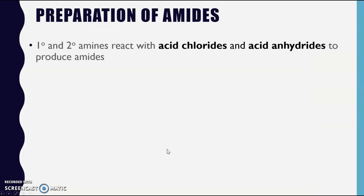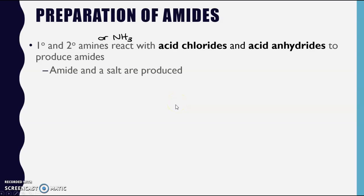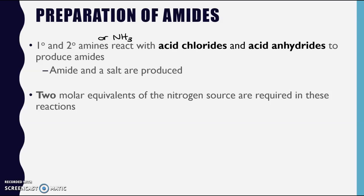To reiterate: primary or secondary amines - and also ammonia - can react with acid chlorides and acid anhydrides to produce amides. We're not going to be able to create an amide from a tertiary amine. We're going to get an amide and some form of a salt. Two molar equivalents of the nitrogen source are required in these reactions.